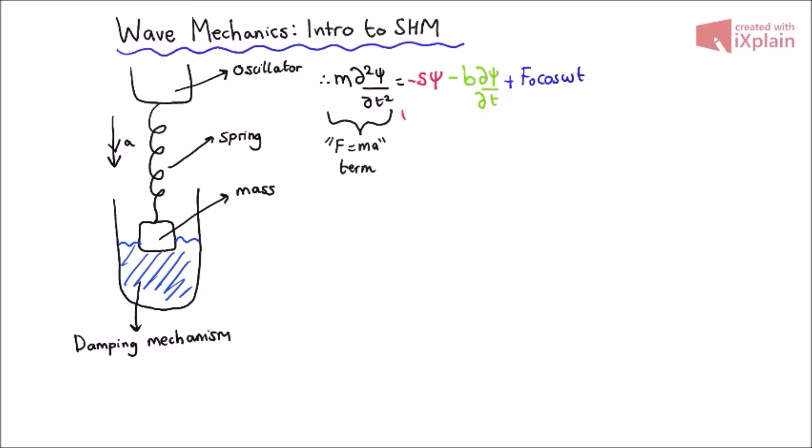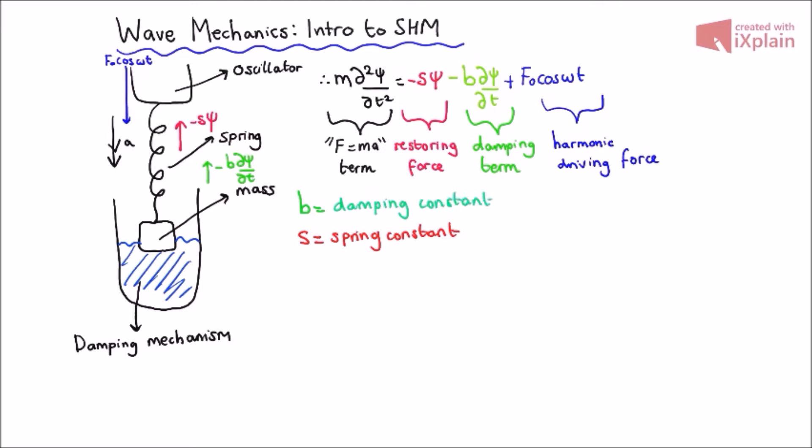Well, psi represents the displacement of the spring from its equilibrium position. The first term represents an acceleration of the spring downwards. The minus s psi term represents the magnitude of the restoring force acting against the direction of motion. The minus b d psi over dt represents the damping or resistive force. And the f0 cos omega t is a harmonic driving force.